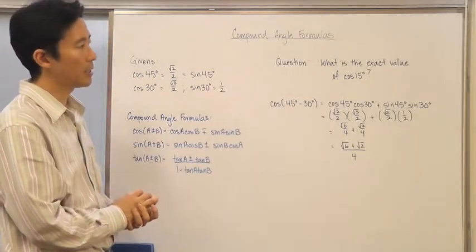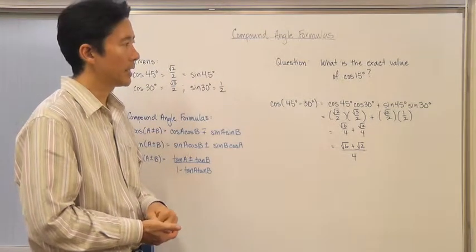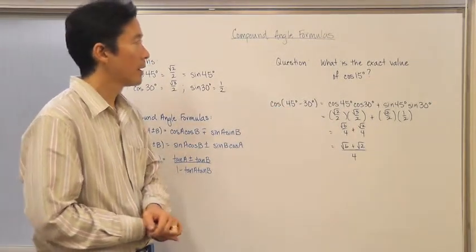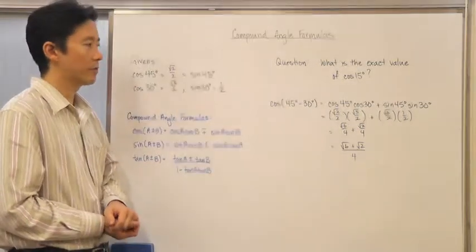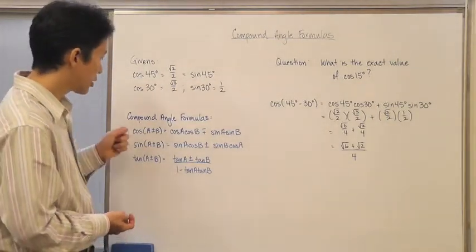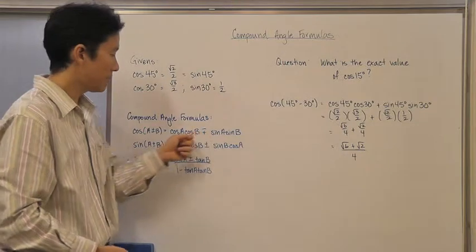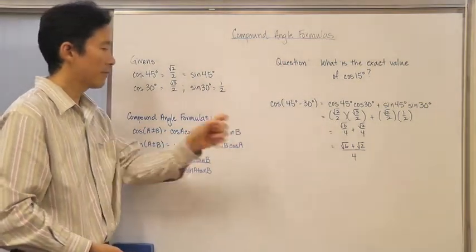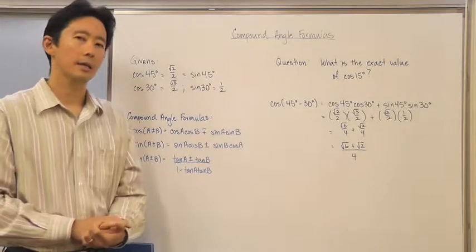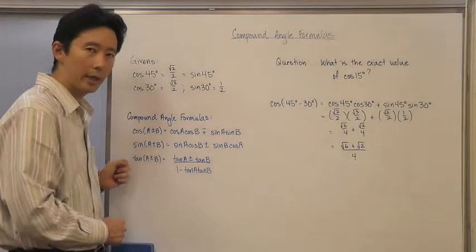The bigger question is how do you handle other angles that are a little different? Sometimes we can't find an exact value because we can't express them as a compound angle. One important topic for class will be how mathematicians actually derived that the cosine of A minus B equals cosine A cosine B plus sine A sine B — that's very much an A-type question. We'll investigate that in class and see how to derive all of these formulas.